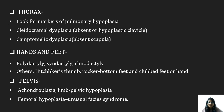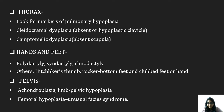In the thorax, we have to look for markers of pulmonary hypoplasia: chest circumference less than 5th percentile, chest-to-abdominal circumference ratio less than 5th percentile, chest-to-trunk length ratio less than 0.2, and femoral length-to-abdominal circumference ratio less than 0.16. We also look for cleidocranial dysplasia, which is absence or hypoplastic clavicle. In hands and feet, we look for polydactyly, syndactyly, and clinodactyly, as well as club feet, rocker bottom feet, etc. In the pelvis, achondroplasia, limb-pelvic hypoplasia, femoral hypoplasia, and unusual facies syndrome should be ruled out.